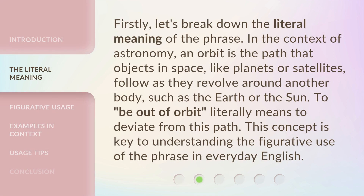Firstly, let's break down the literal meaning of the phrase. In the context of astronomy, an orbit is the path that objects in space, like planets or satellites, follow as they revolve around another body, such as the Earth or the Sun. To be out of orbit literally means to deviate from this path. This concept is key to understanding the figurative use of the phrase in everyday English.